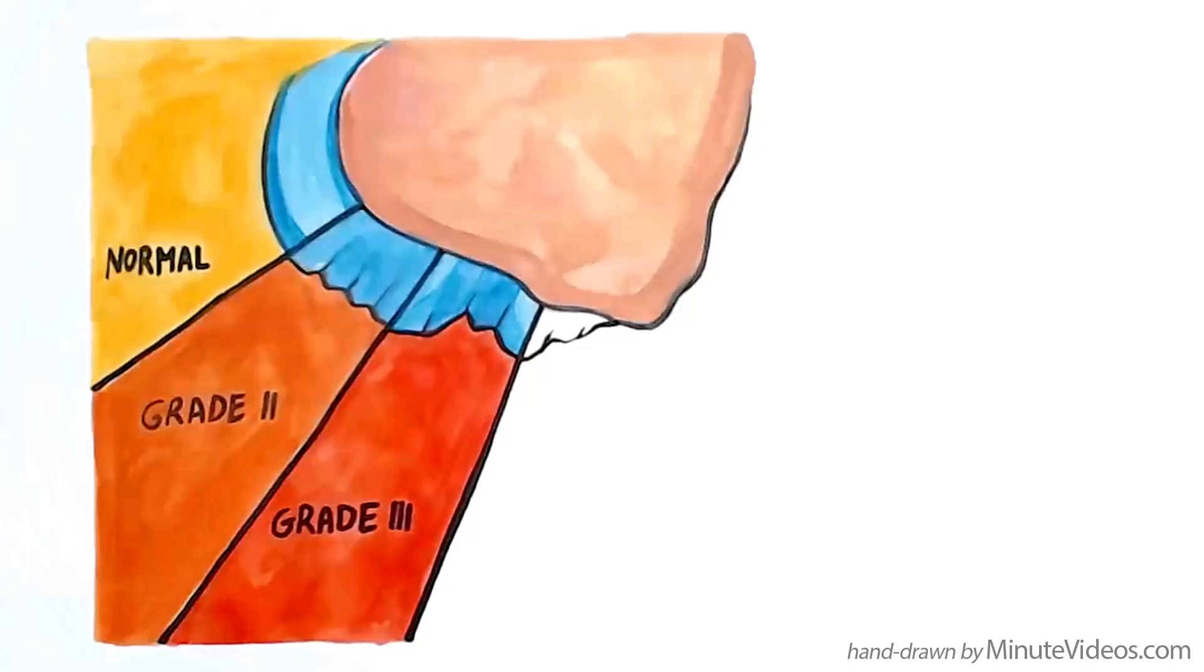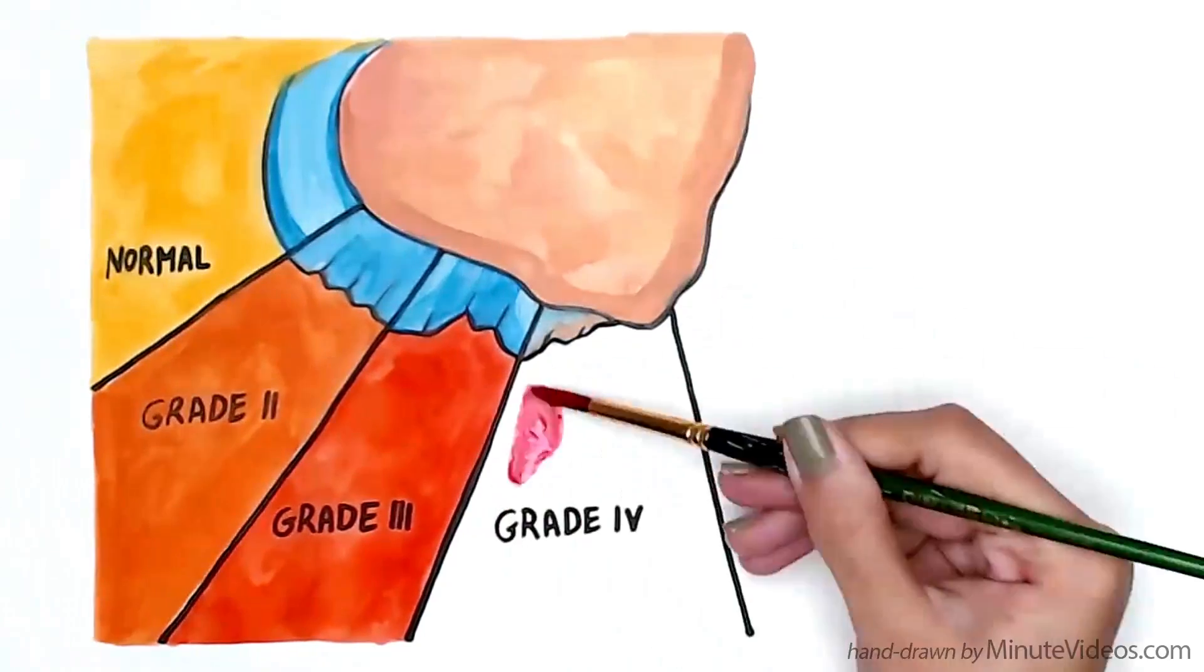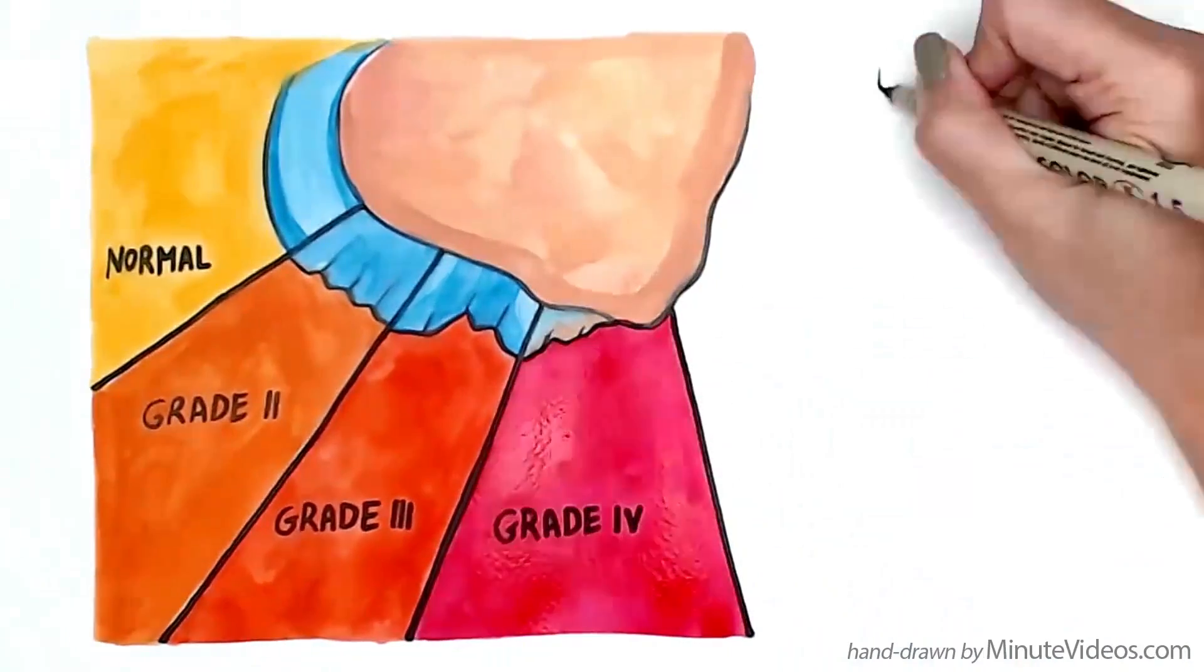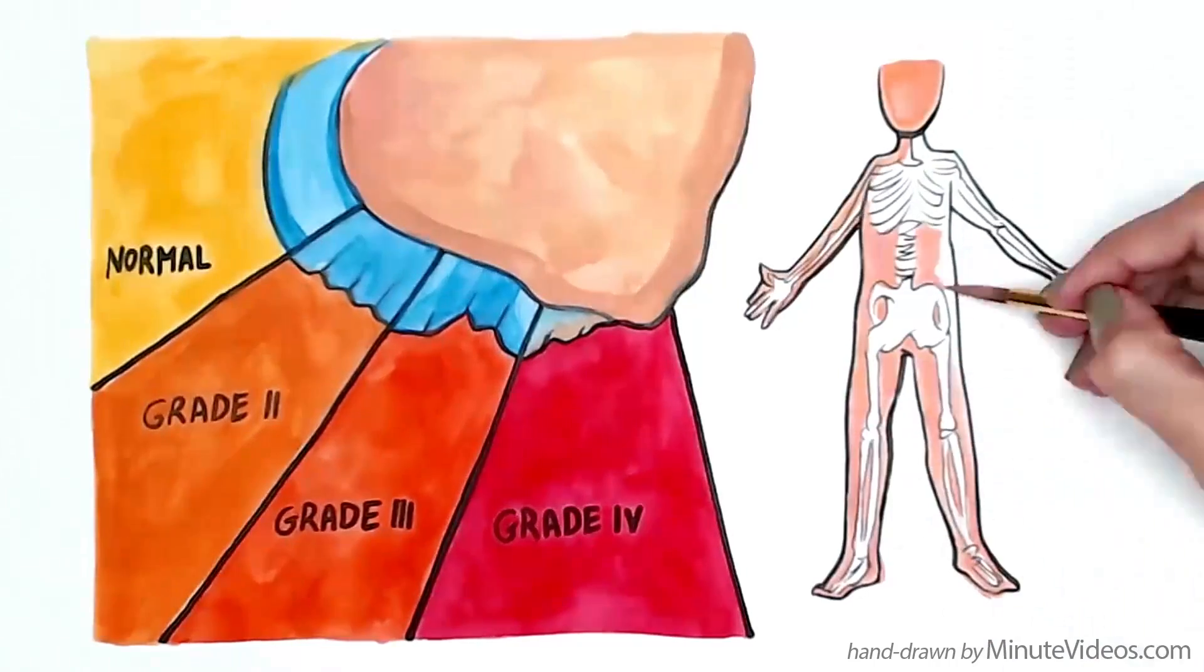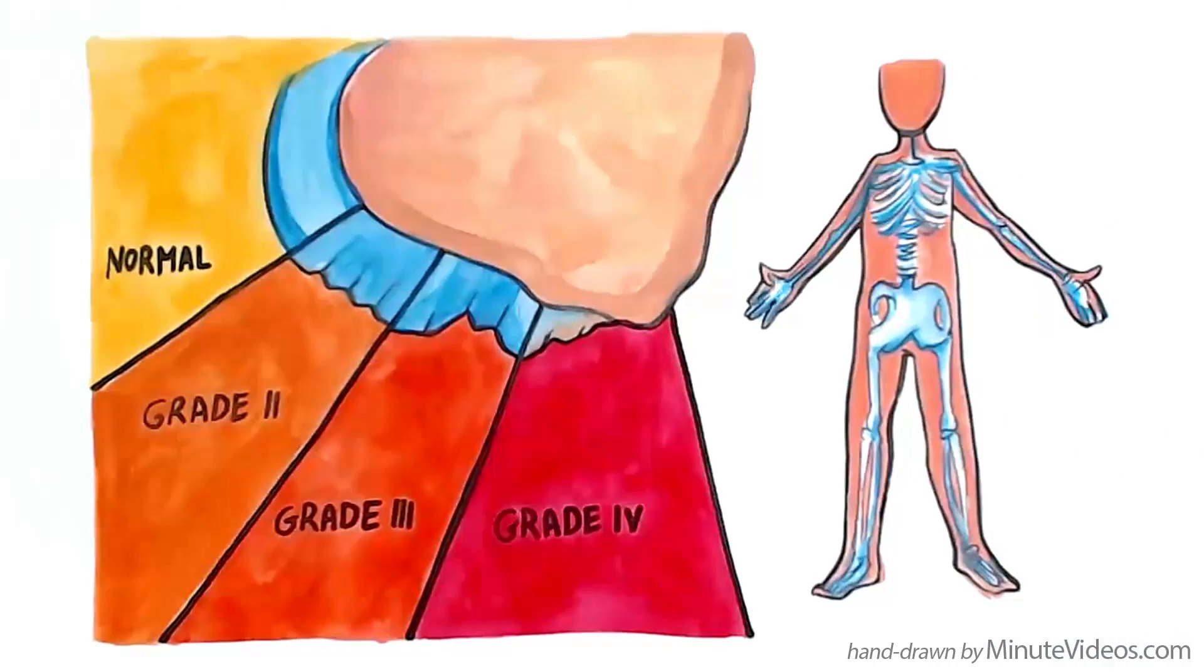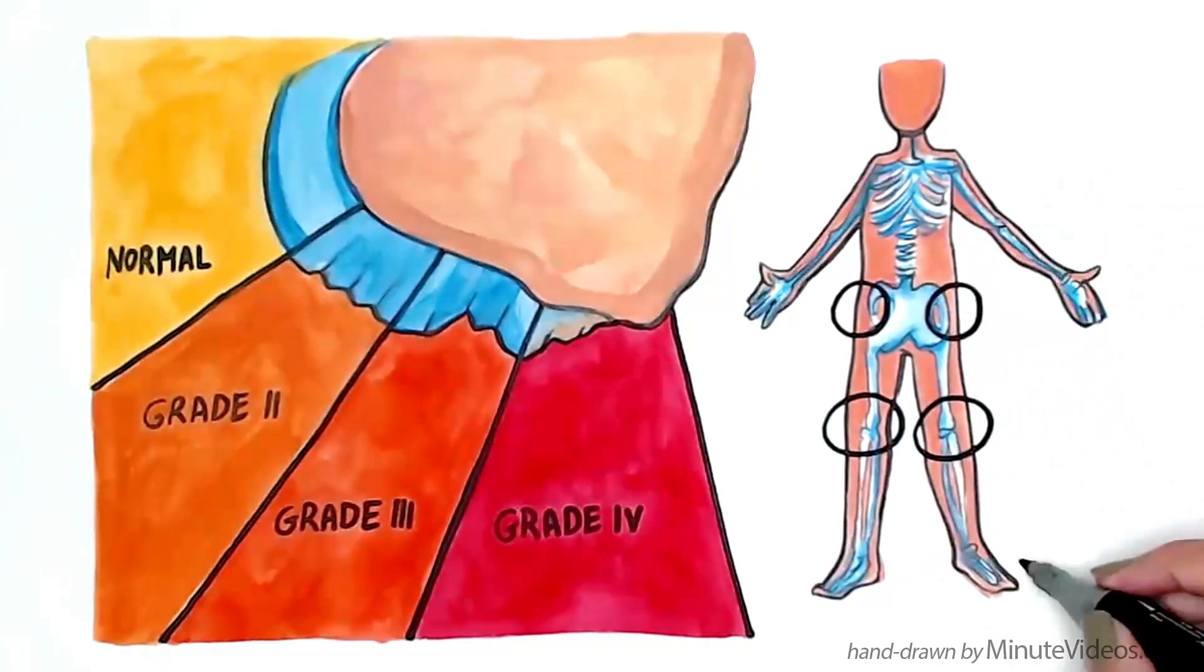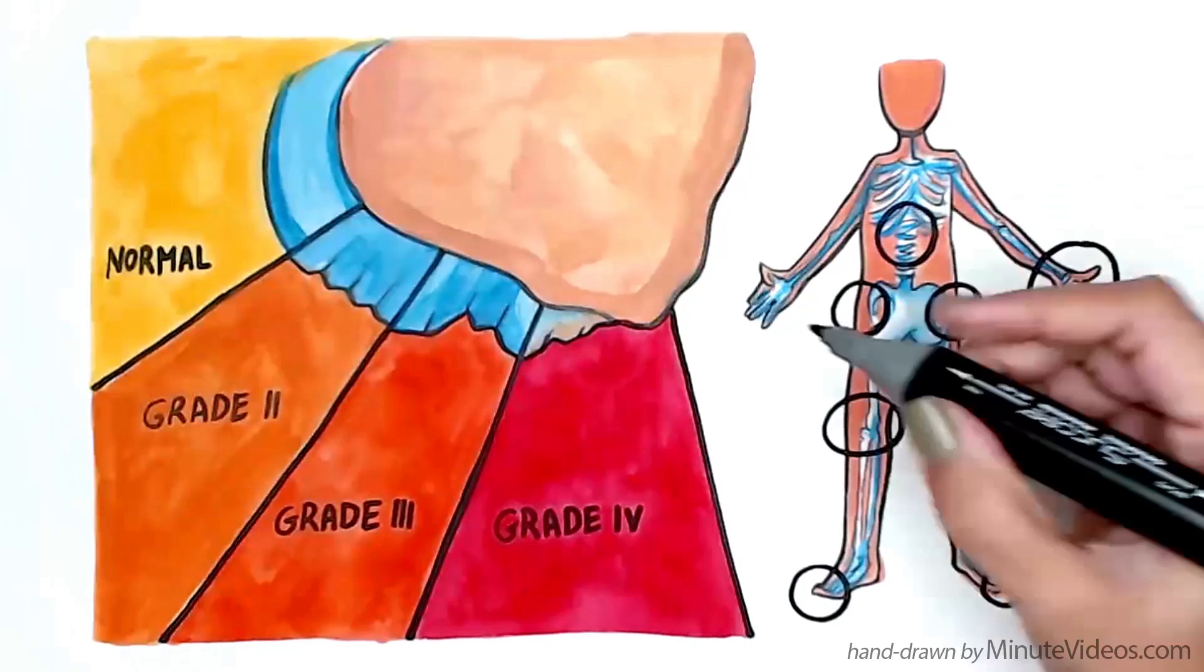Bone spurs are protrusions that can grow from the bone as a result of this constant friction. Osteoarthritis can affect any joint of the body, but it is most prevalent in knees, hips, big toes, spine and hands.